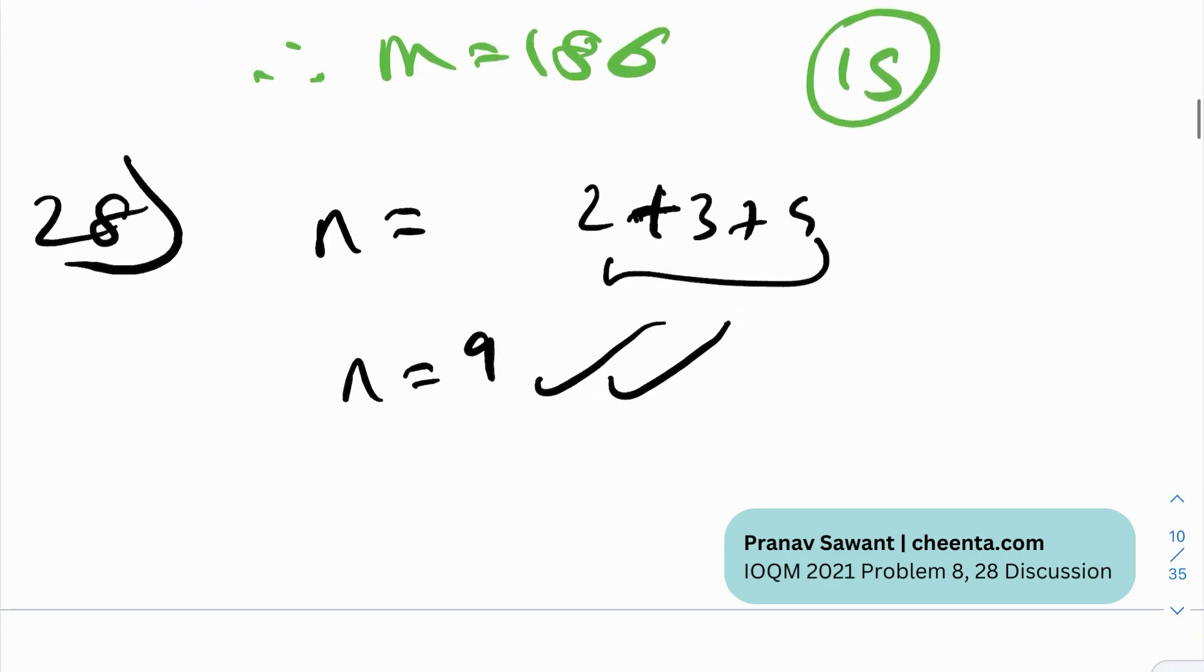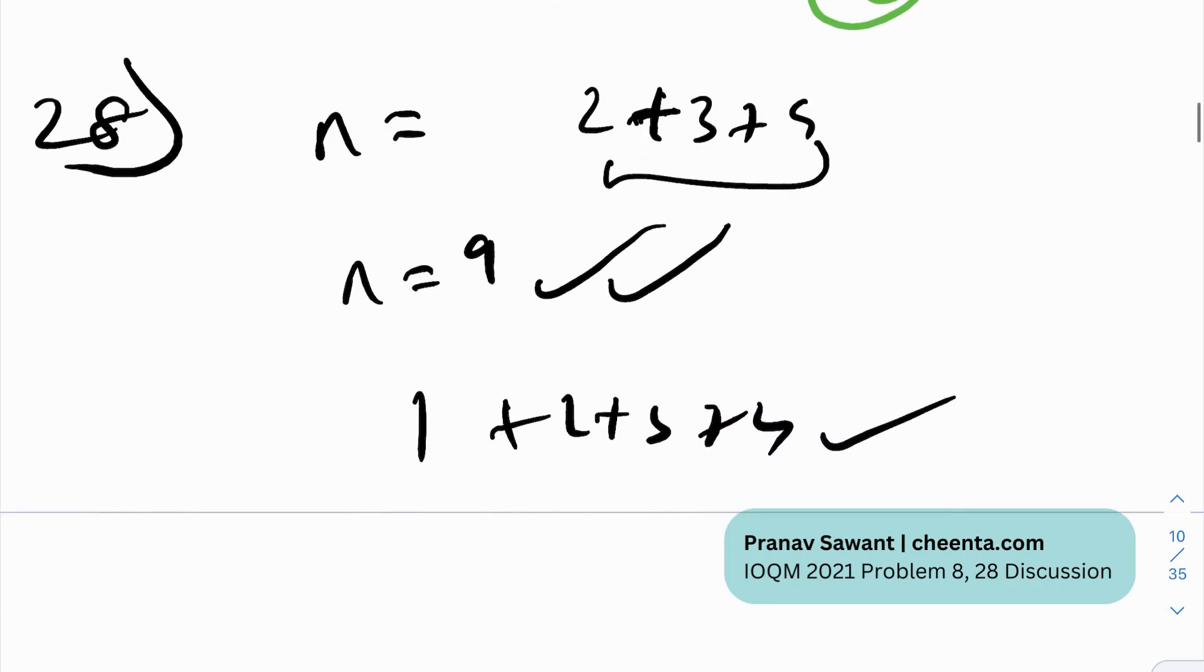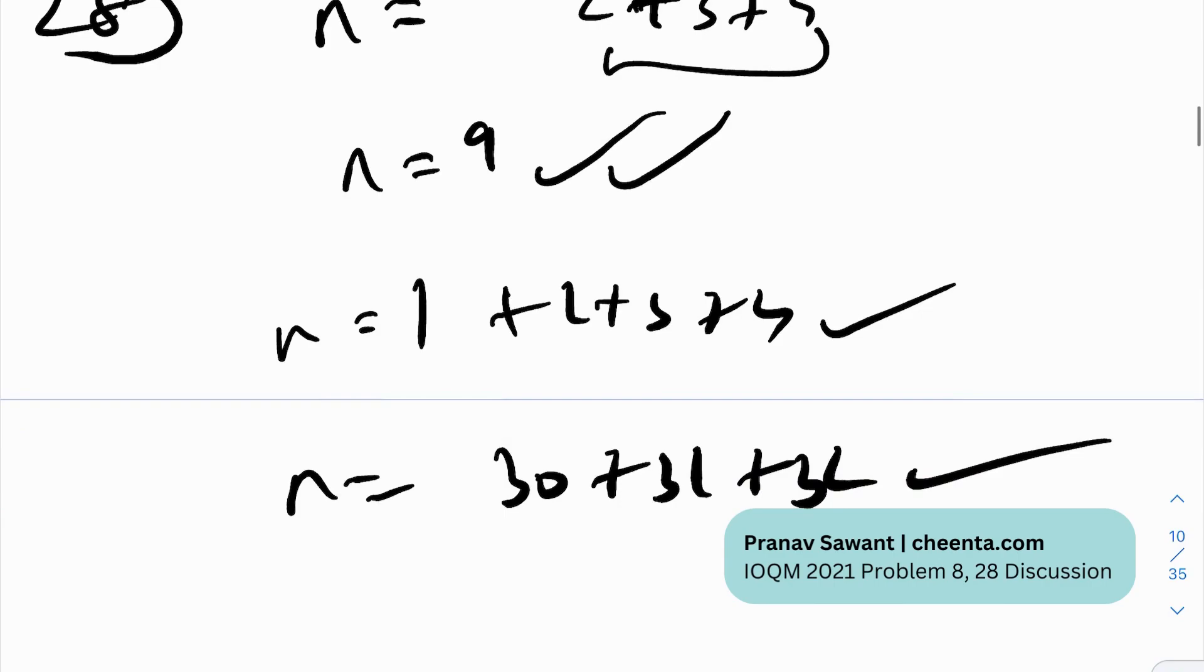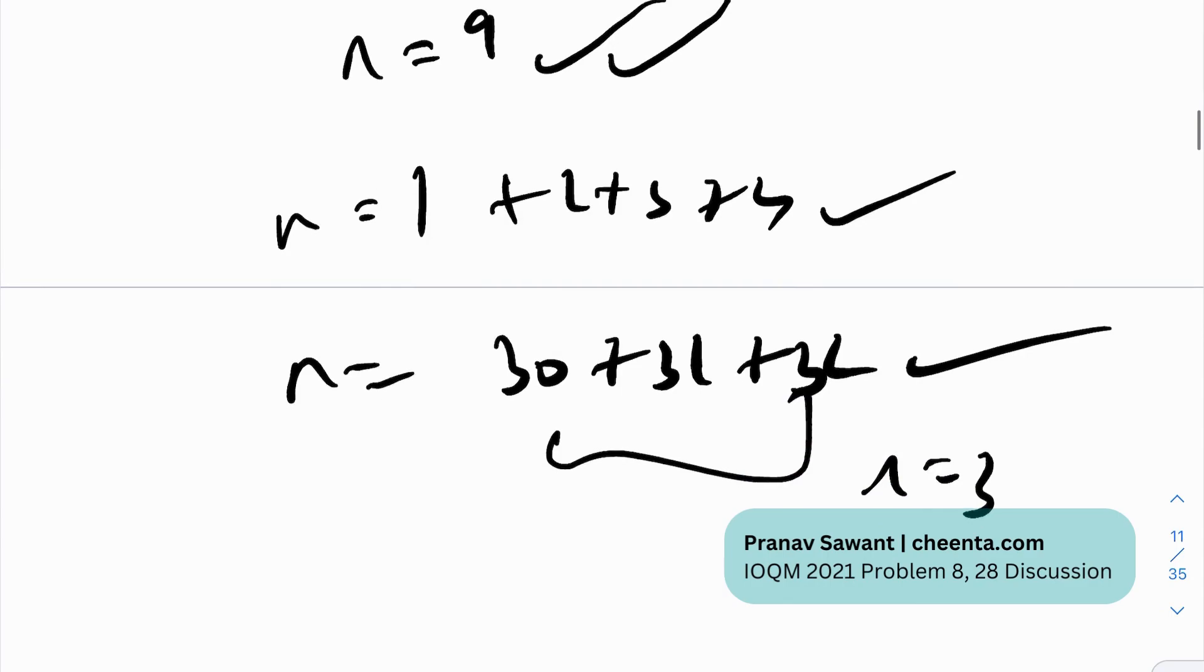Now, an important thing to note is that it does not need to be consecutive starting from 1. So for example, it does not need to start from 1. So 1 plus 2 plus 3 plus 4, this is valid. However, this is not the only good values of N. So N can start from, let's say, 30 plus 31 plus 32. This is also a good value of N. It's the sum of R consecutive numbers where R is equal to 3. And obviously, it need not start from 1. That's what they're given in the problem.